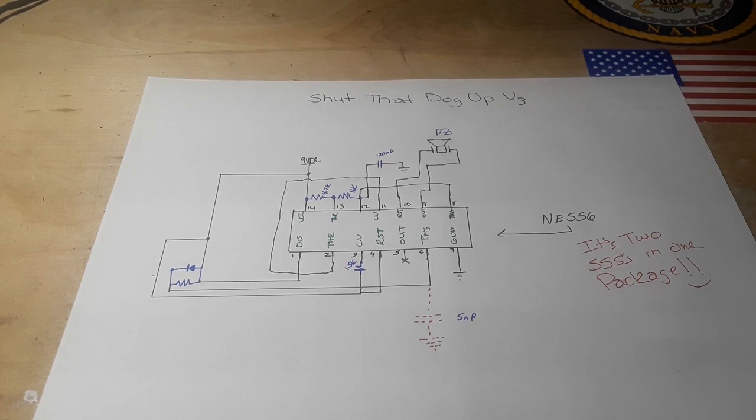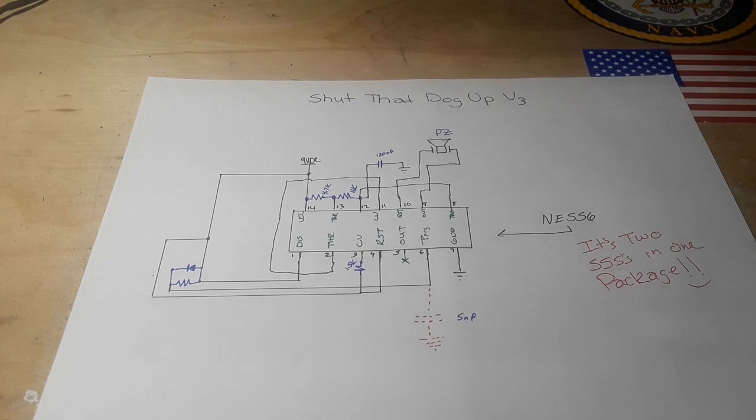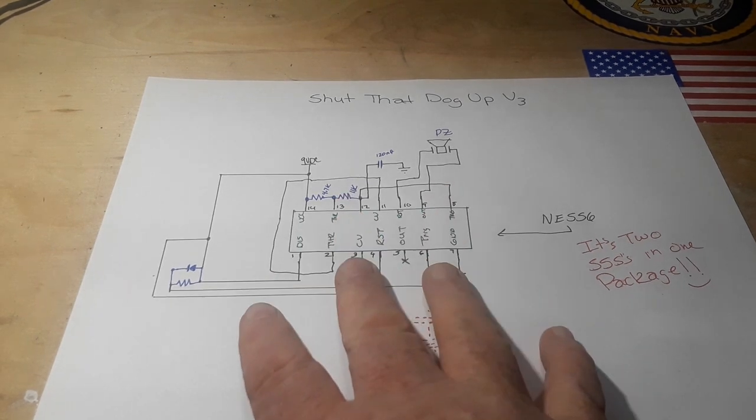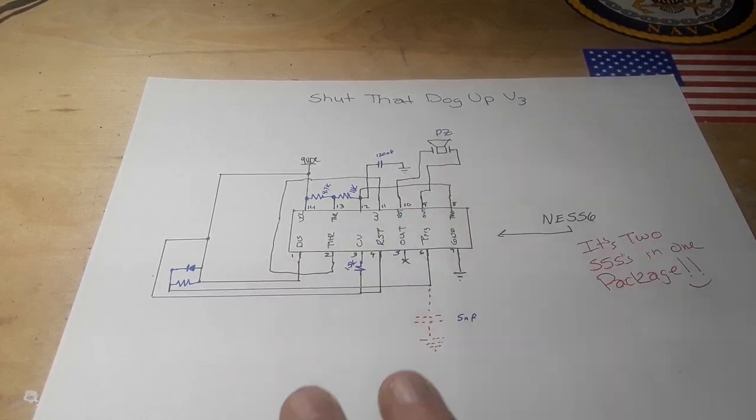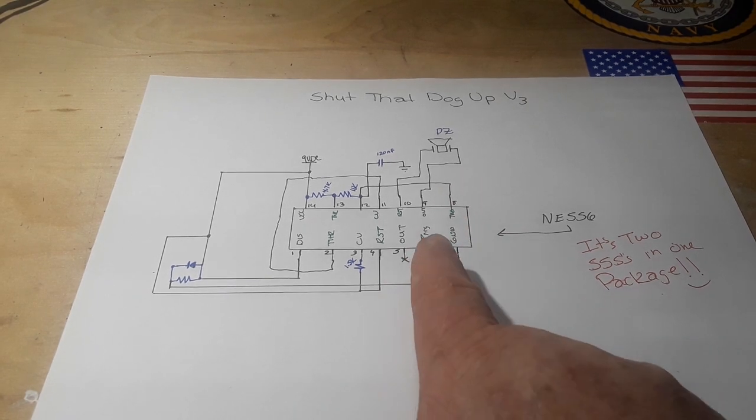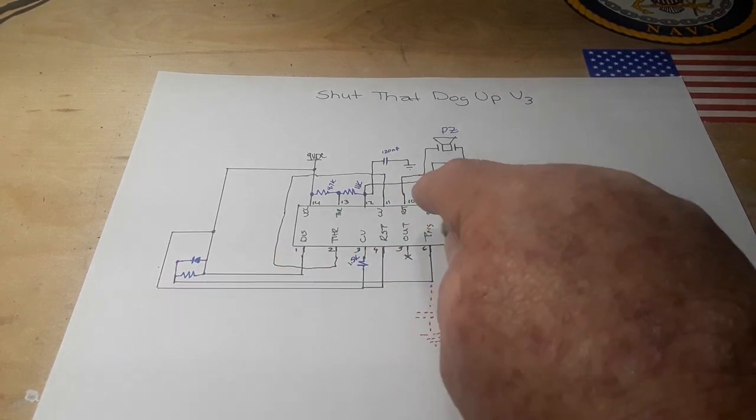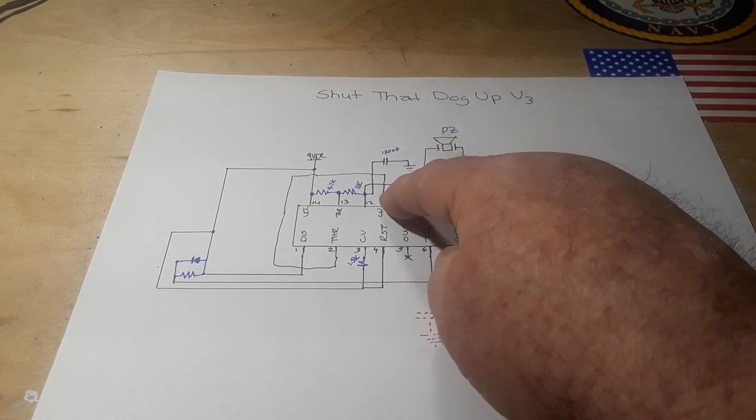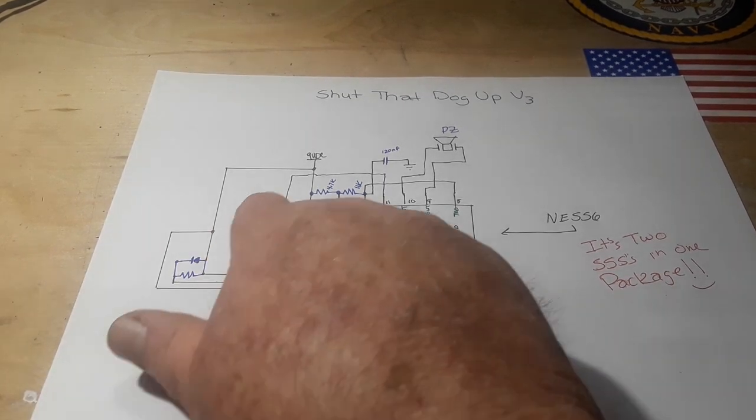So what we have here is a 556, which is basically two 555 timers in one package. We're going to take this side of the 556. Remember there's two separate 555 timers in here. We're going to take, we'll call it timer one, and cause it to create a frequency. But we're not going to take that output. Instead we're going to pass the trigger through this little conditioning circuit here, and we're going to take pin 11 over here, which is the control voltage pin held high to nine volts, and we are going to change that control voltage pin with that little bit of circuit there.